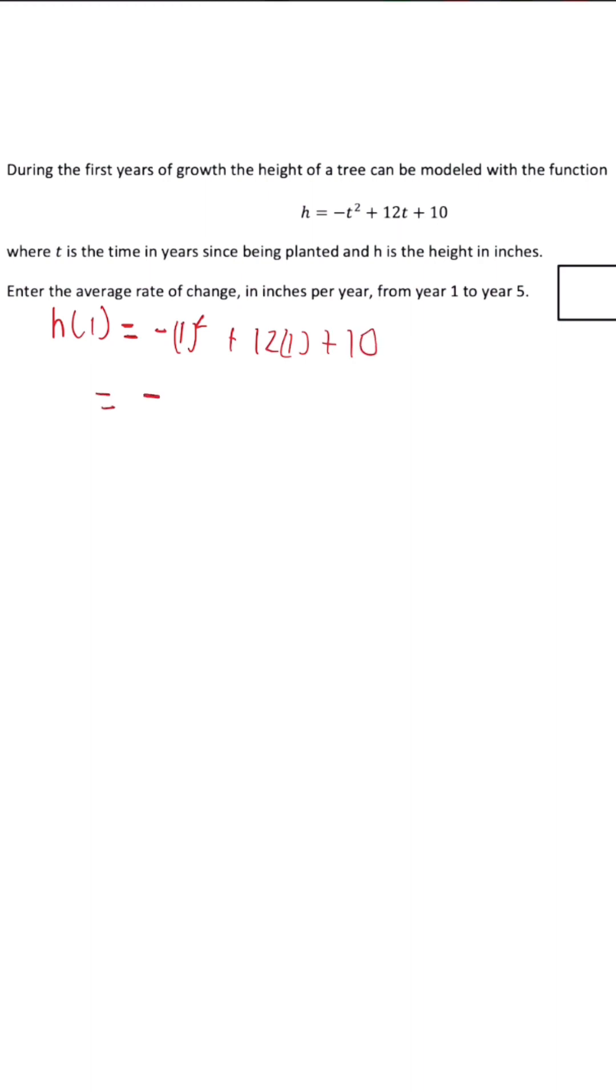So h of 1 is equal to negative 1 plus 12 plus 10. Once we simplify this, we are going to get 21. So our first ordered pair is 1, 21.